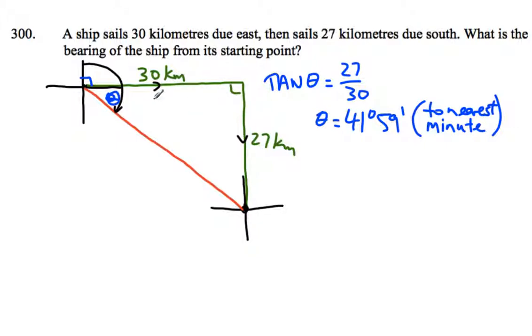Now that's not the bearing. That's just the blue squiggle. And so we're going to have to add the blue squiggle, the 41 degrees 59 minutes, to the 90 degrees that we need to go around from the bearing. So the bearing goes from north clockwise. So we've got 90 and the angle we just found. So we add those two together. And we get 131 degrees 59 minutes. That's the bearing around from north to the direction that the ship is now.